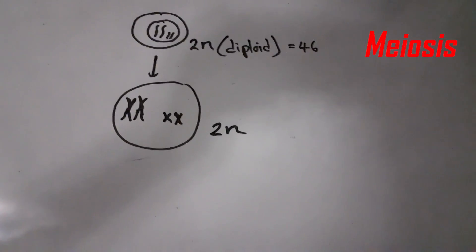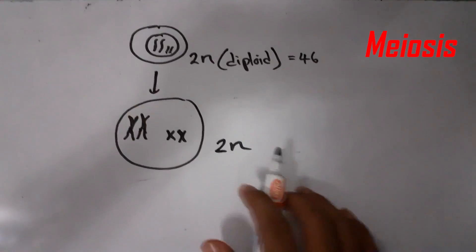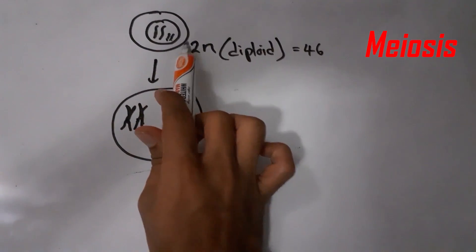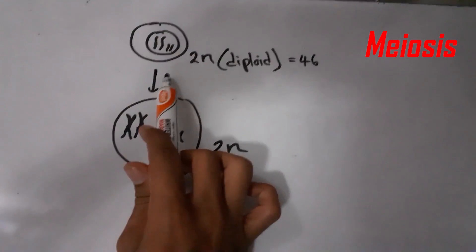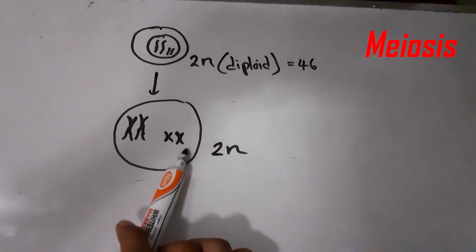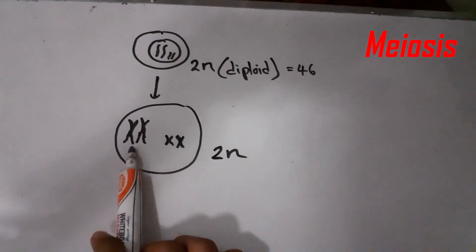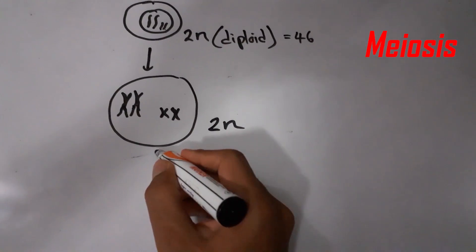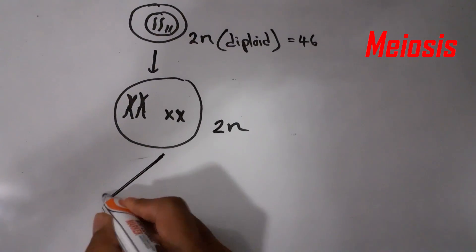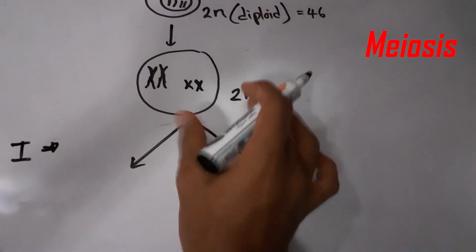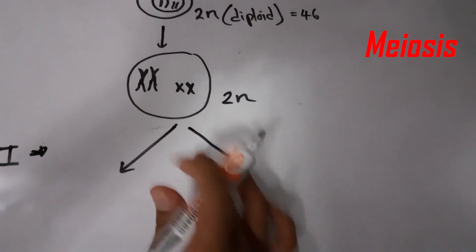Let's talk about meiosis. In meiosis, we consider a cell with two homologous pairs of chromosomes, with one pair from mother and one from father. In meiosis, there are two divisions taking place. In the first division, the chromosome number will be halved — the homologous pairs of chromosomes will be separated into two cells.